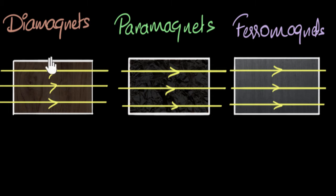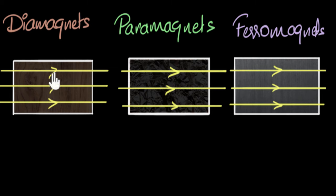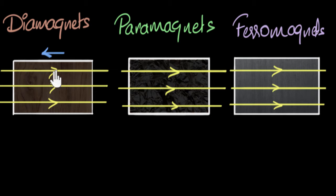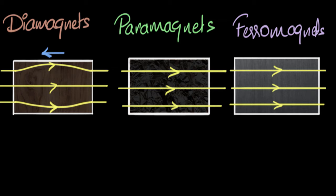Let's start with diamagnets. They tend to repel magnets by inducing very tiny magnetic moments in the opposite direction. As a result, there is a very tiny magnetic field induced inside (like wood) in the opposite direction, so the total field inside becomes slightly less than the field outside. Since the field value is less, field lines are drawn farther apart — diamagnets tend to expel field lines out of their body.